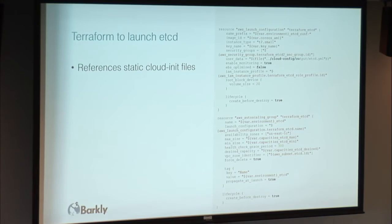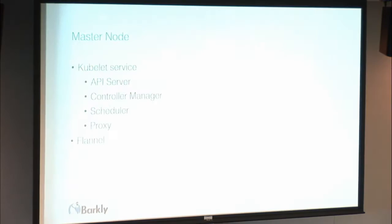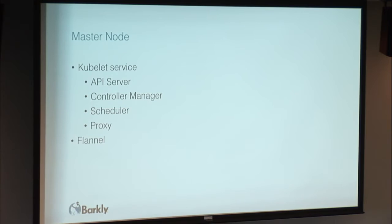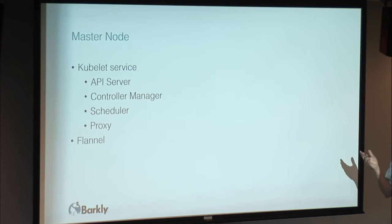Now the master nodes — the real bread and butter of Kubernetes. You've got your kubelet service, and the kubelet service starts up all the rest: the API server, controller manager, scheduler, and proxy. Those are the main components right now. They're constantly adding more with each version. And flannel is another component we needed so that every pod has its own IP in Kubernetes.